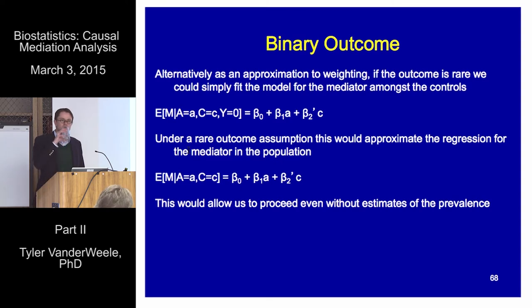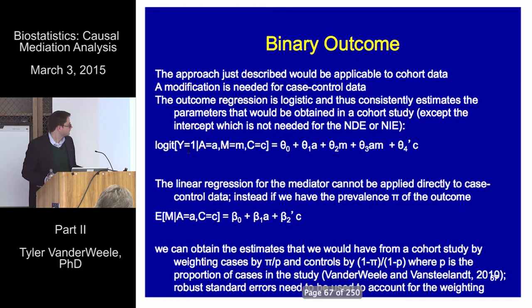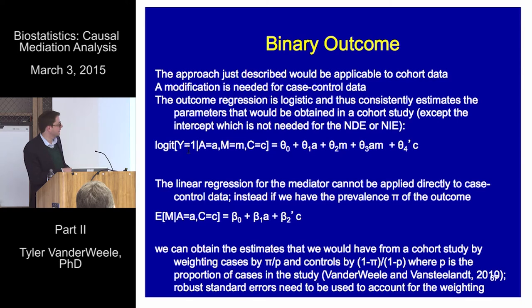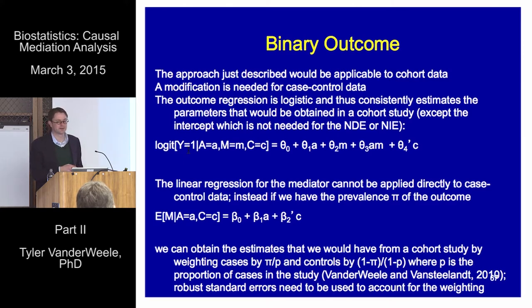To clarify: pi is the proportion in the population as a whole with the outcome, and p is the proportion of cases in the case-control study.